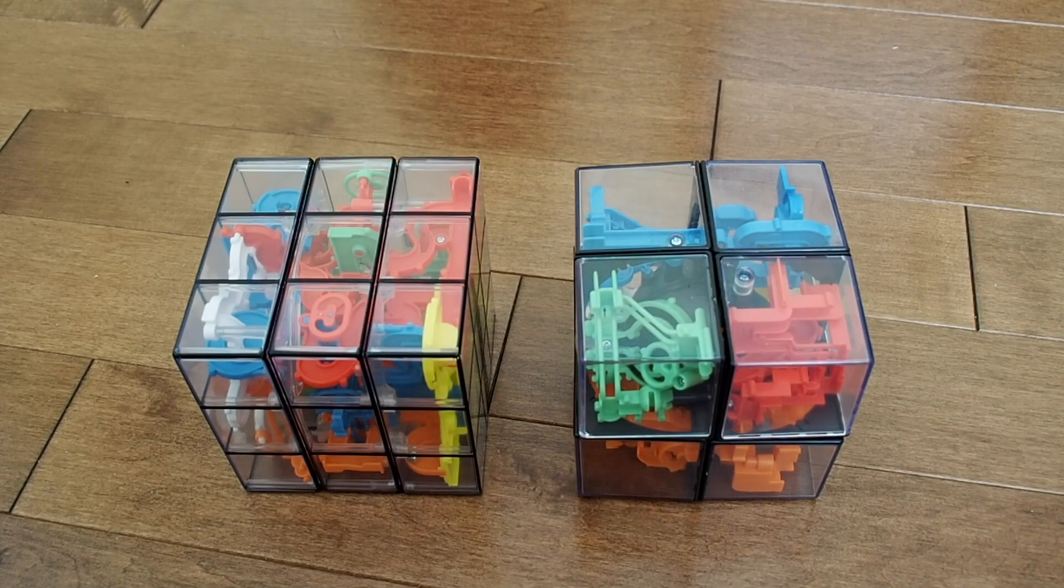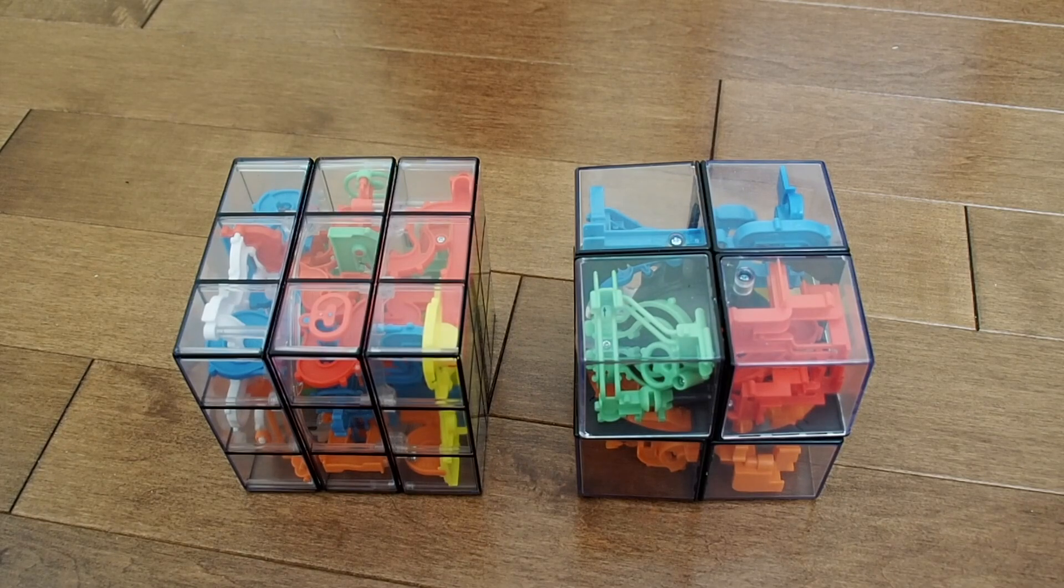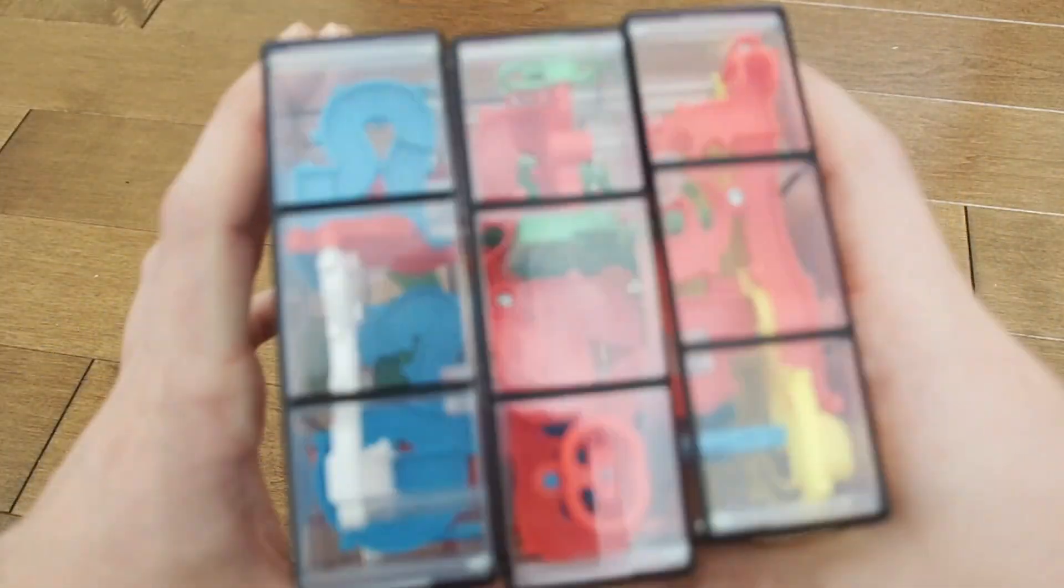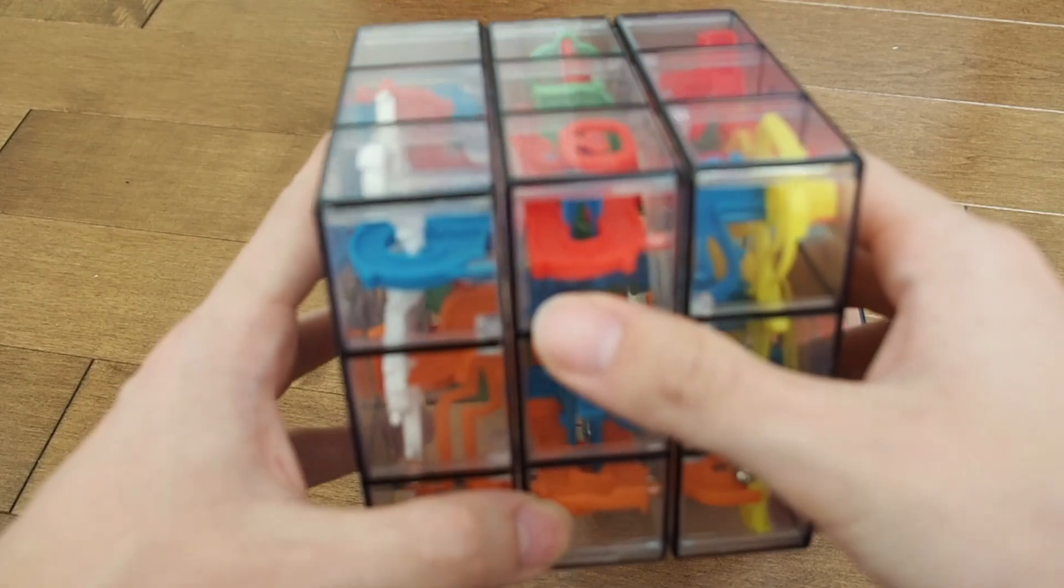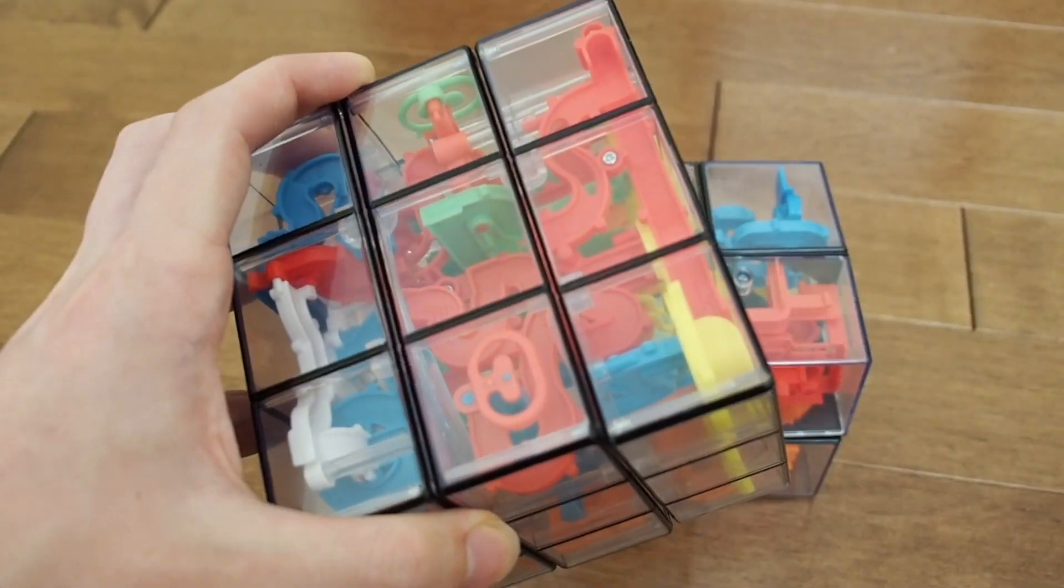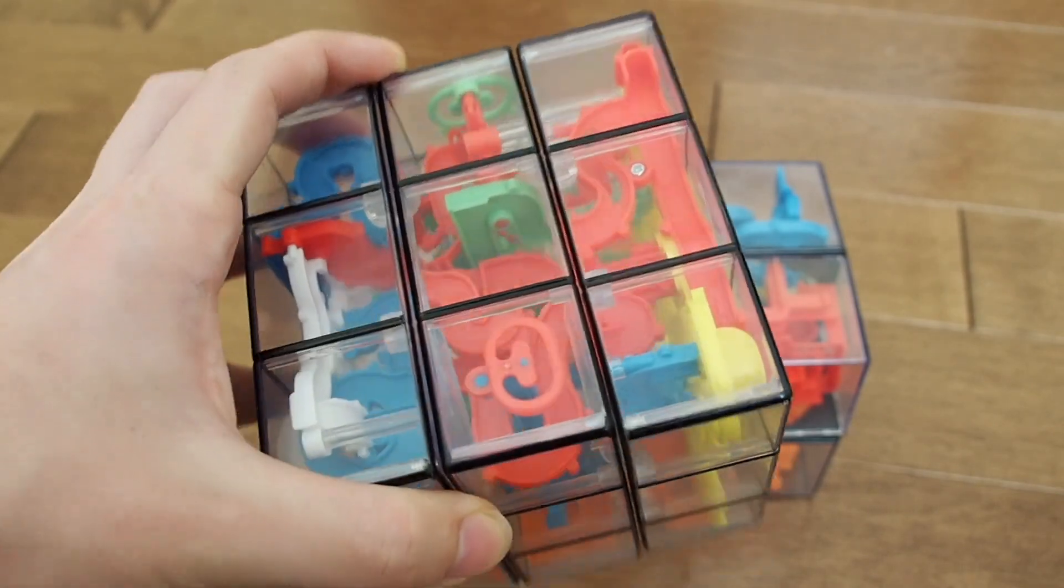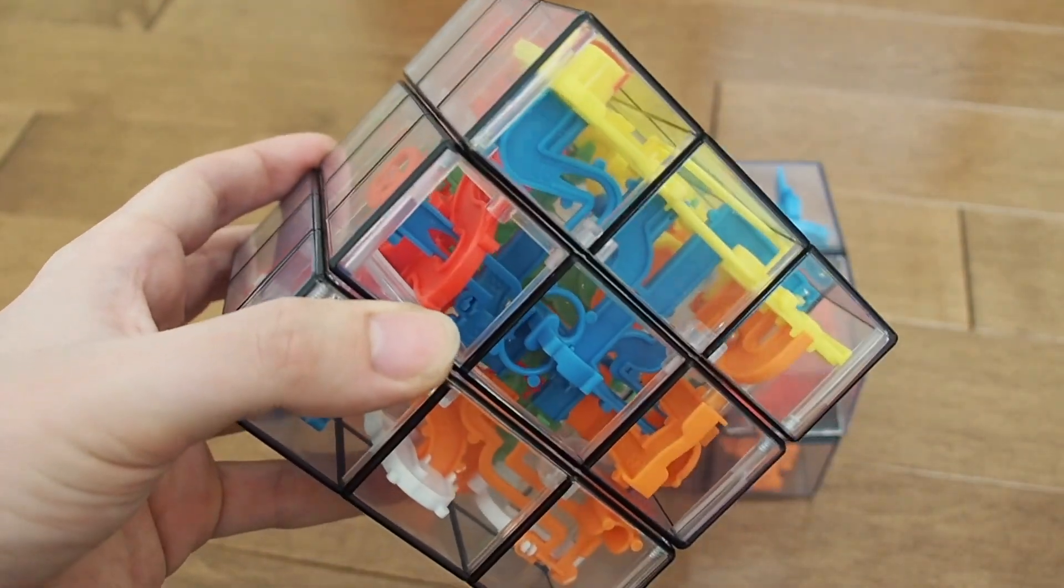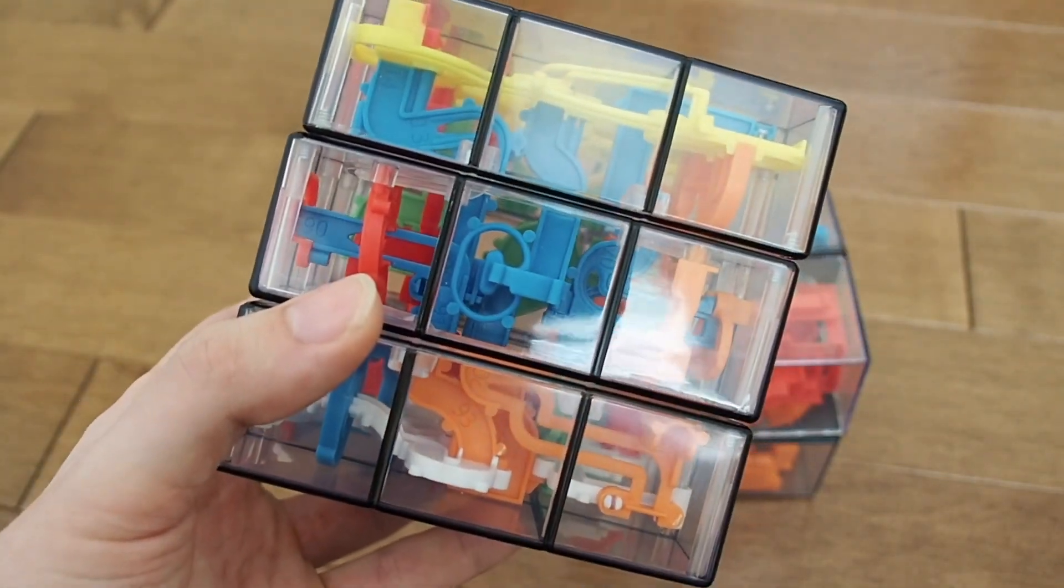On that note, the 3x3 in terms of obstacles is very one-note. There's not a whole lot of variation. You'll notice it's almost entirely flat. Basically there's not a whole lot of normal perplexuses have tracks on all different angles, this basically only has tracks on two axes as you can kind of tell. That takes a lot of the fun out of it for me.